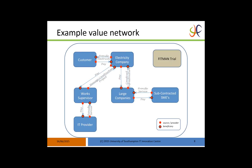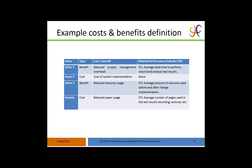The value network shows costs and benefits in diagram form, with directional arrows between boxes representing stakeholders — for example, customers pay an electricity company and the company provides electricity. This is step one of this part of the analysis. In terms of defining costs and benefits, it's useful to present them in table form, identifying for each actor in the value network whether there are benefits or costs, and ideally relating those costs and benefits to performance indicators.